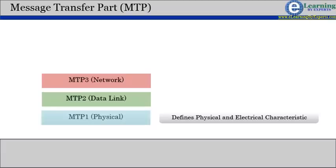The lowest level, MTP Level 1, defines physical and electrical characteristics.